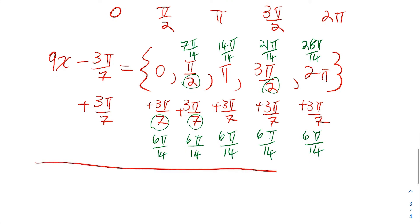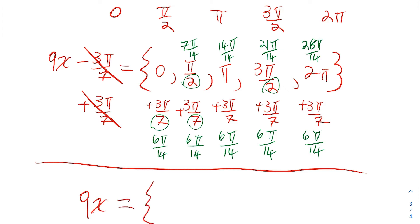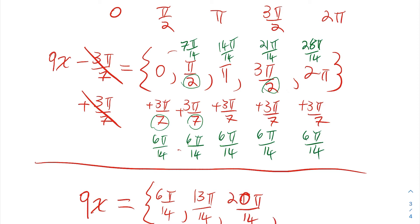On the left side those cancel, leaving just 9x. On the right side: 0 plus 6pi over 14 is 6pi over 14; 7pi over 14 plus 6pi over 14 is 13pi over 14; 14pi over 14 plus 6pi over 14 is 20pi over 14; 21pi over 14 plus 6pi over 14 is 27pi over 14; and 28pi over 14 plus 6pi over 14 is 34pi over 14.